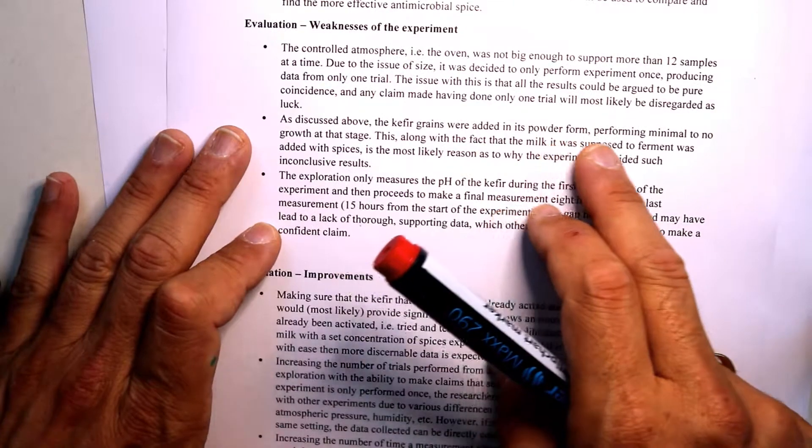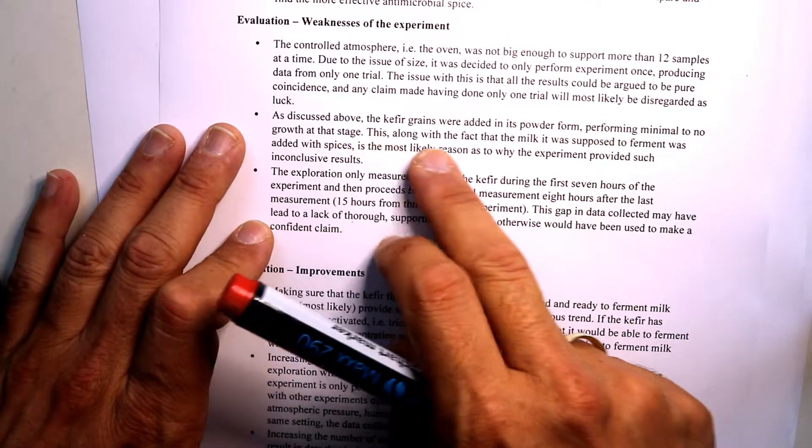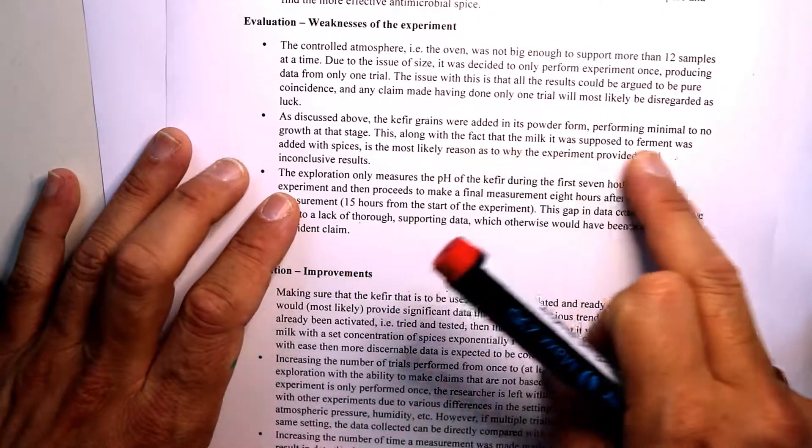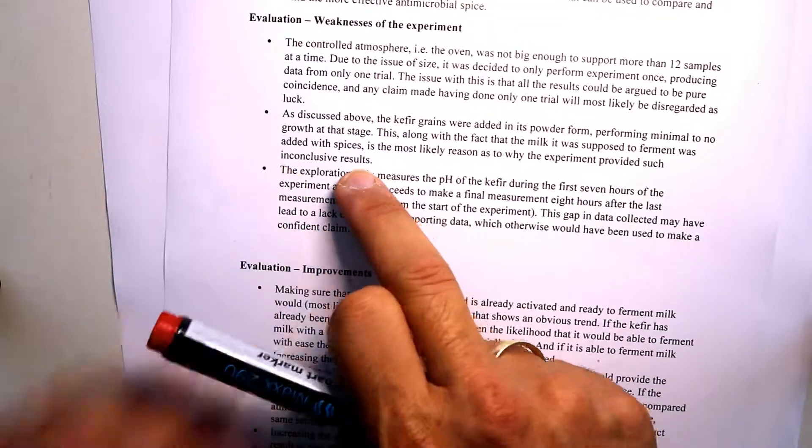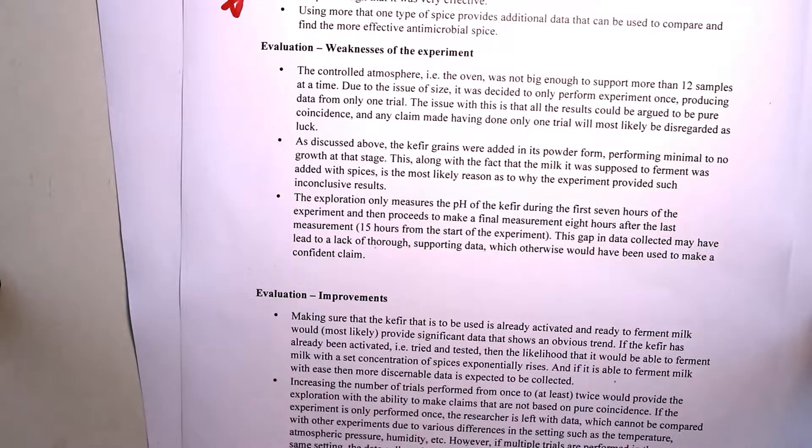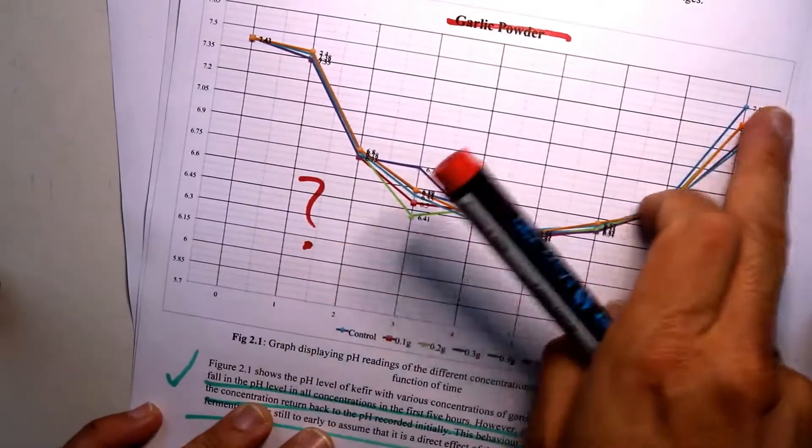Okay, were added in powder form, no growth. Why is this a problem? This, along with the fact that the milk was supposed to ferment, most likely the reason why the experiment provides such inconclusive results. What do you mean?